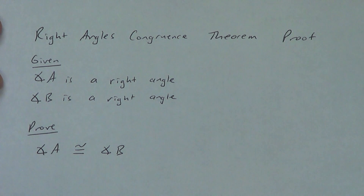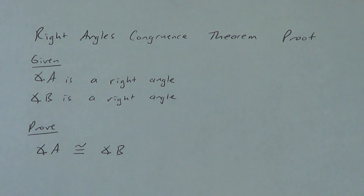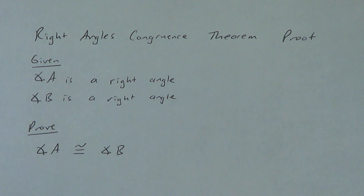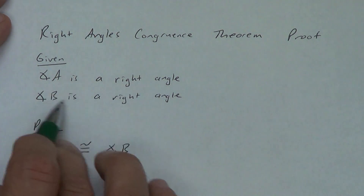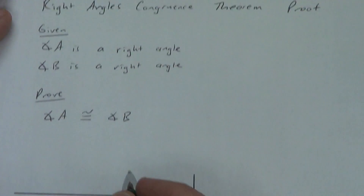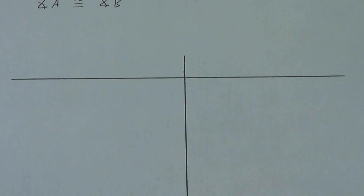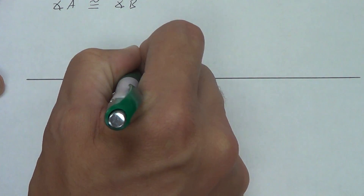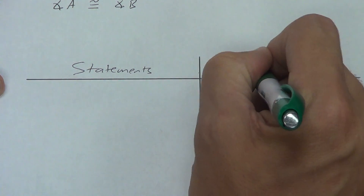Right Angles Congruence Theorem proof. Do you remember what the Right Angles Congruence Theorem said? It said: if two angles are right angles, then they are congruent to each other — or all right angles are congruent to each other. So what we're going to do is prove that if we know we have two right angles, then they have to be congruent. Remember our two-column proof concept — we're going to start with statements and our reasons.